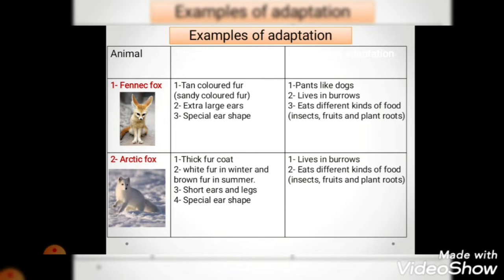We took many examples of adaptation, including the fennec fox and the arctic fox. The fennec fox lives in the desert, but the arctic fox lives in the cold tundra desert. The fennec fox has adaptations that help it live in hot weather, like its tan-colored fur, extra large ears, and special ear shape. All of these relate to body structure, so we can say these are structural adaptations.